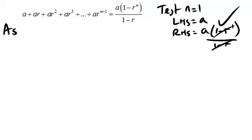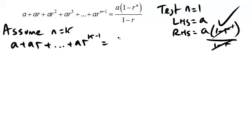Then we assume. So I'm cramming it onto a page here. Assume it's true for n equals k. So you've got to write it out. Plus dot dot dot plus a r to the k minus 1 equals a times 1 minus r to the k over 1 minus r. I needed to see that in your working.